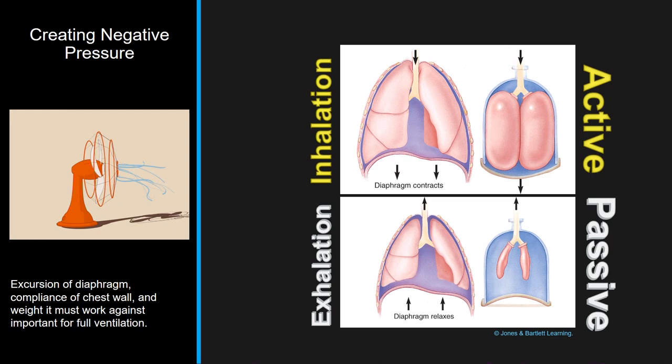The diaphragm flattens, increases intrathoracic volume, decreases pressure and you suck air through your mouth. How big does a hole in your thoracic cavity have to be before air preferentially goes through the hole instead of through your airway? Two thirds the diameter of your trachea. Your trachea is about 1.75 centimeters, so a hole in your chest wall of about a centimeter and a half means air will preferentially go through that hole. That's a true ventilatory issue.